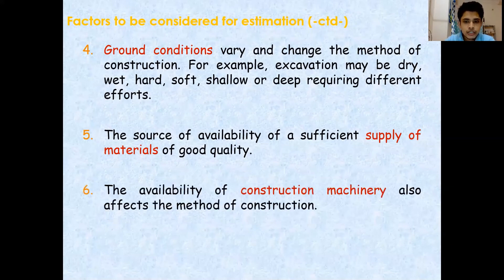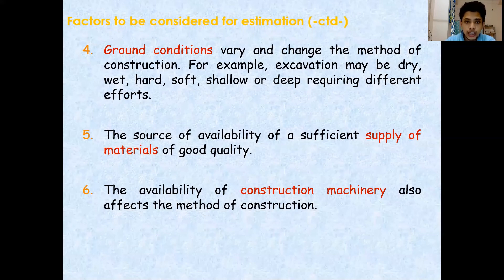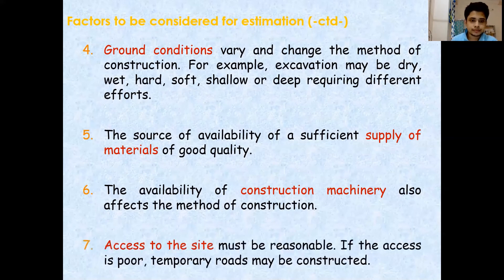Point number six is construction machinery. What type of construction machinery will be required? Is it available nearby? If not, we have to hire it from somewhere else, and that will add to the cost.